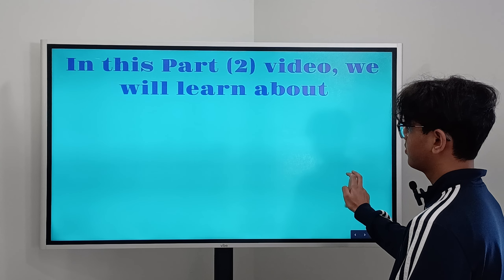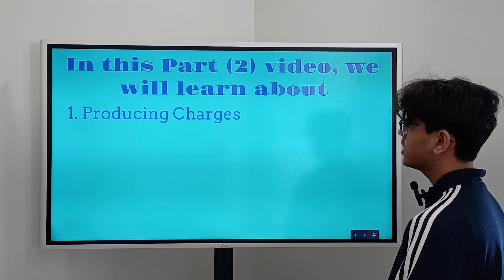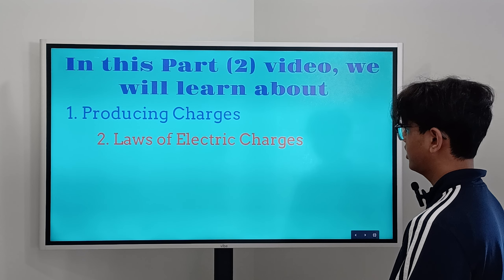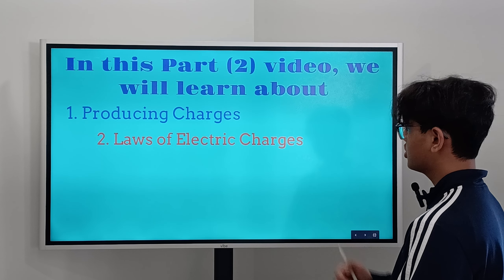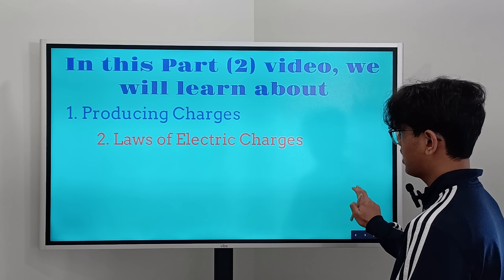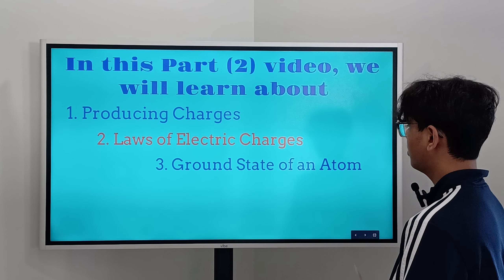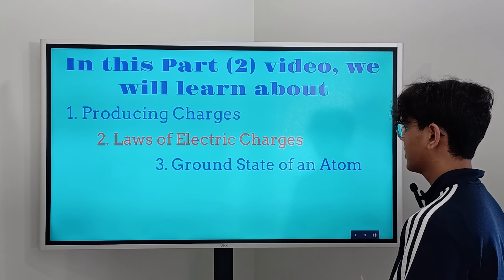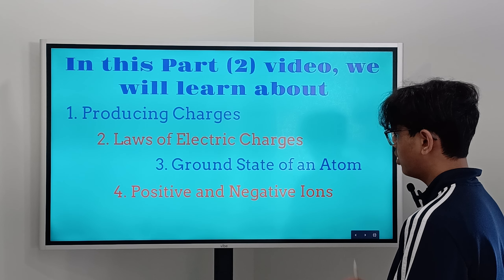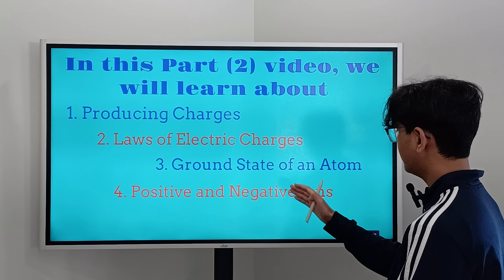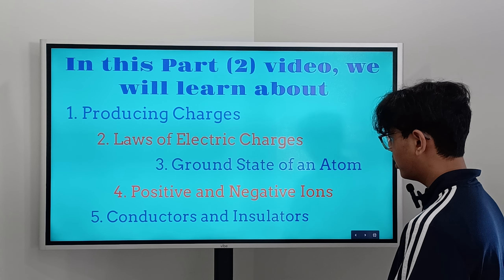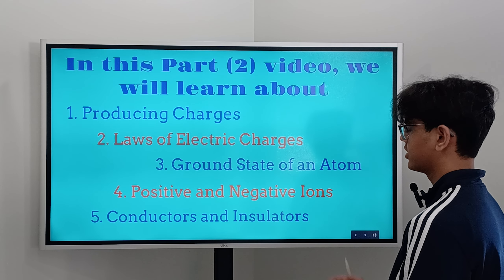So in this part 2 video, what are we going to learn about? First, we're going to learn about producing charges. Second, we're going to learn about the laws of electric charges. Third, we're going to cover the ground state of an atom. Fourth, we're going to go over positive and negative ions. And finally, fifth, we're going to go over conductors and insulators.